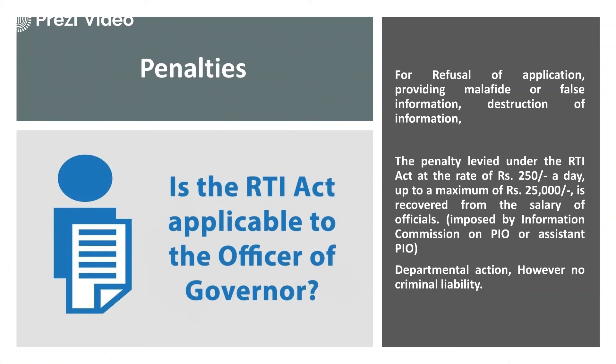Penalties apply for refusal of applications, providing malafide or false information, or destruction of information. The penalty levied under the RTI act is 250 rupees per day, up to a maximum of 25,000 rupees, recovered from the salary of the official. This is significant — it has reduced a lot of corruption because the PIO must work, solve, and resolve the query. Additionally, departmental action can take place if the query is not resolved or if false information is provided. There is no civil or criminal liability, but departmental action is still a serious consequence.